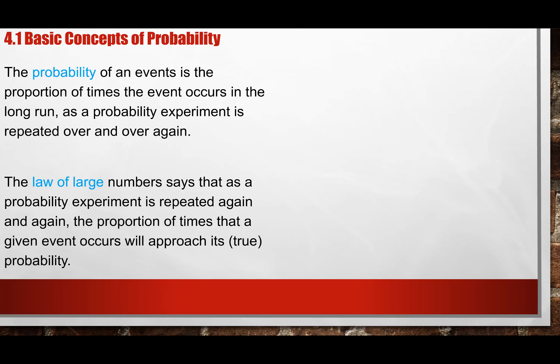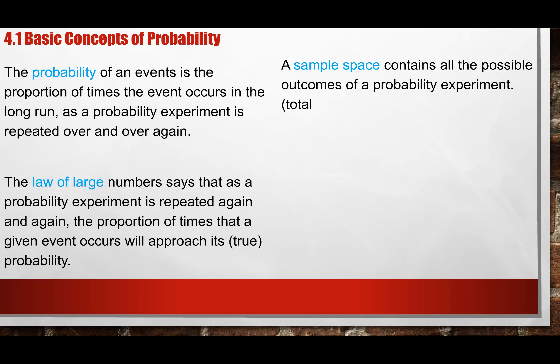The law of large numbers basically means that if you do one experiment over and over, it will come out to that true probability — whatever the probability is. If you roll a dice, it's one-sixth, and if you do it a lot of times, it will come out to be one-sixth.